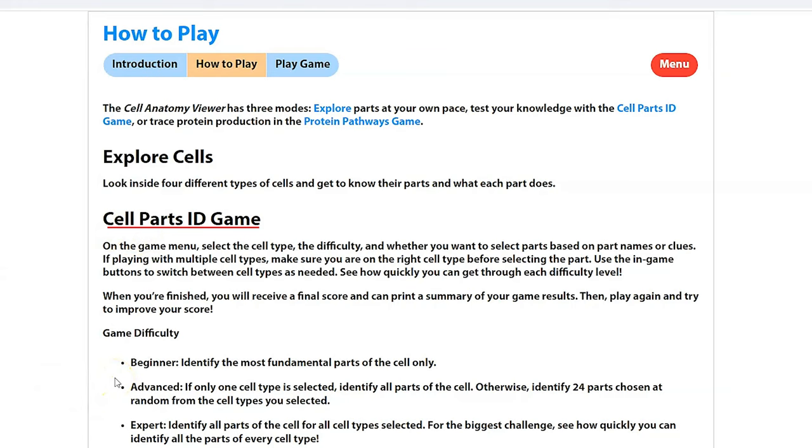There's the cell parts ID game, which is broken up into different levels. When you select the beginner mode, it's only the parts of the cell. If you go into the advanced mode with one cell type selected, your biggest challenge will be how quickly you can identify the parts. But remember, you can actually mix and match different cell types. And then there's the expert mode where you identify all the parts of the cell for all the cell types selected. That becomes really a big challenge.